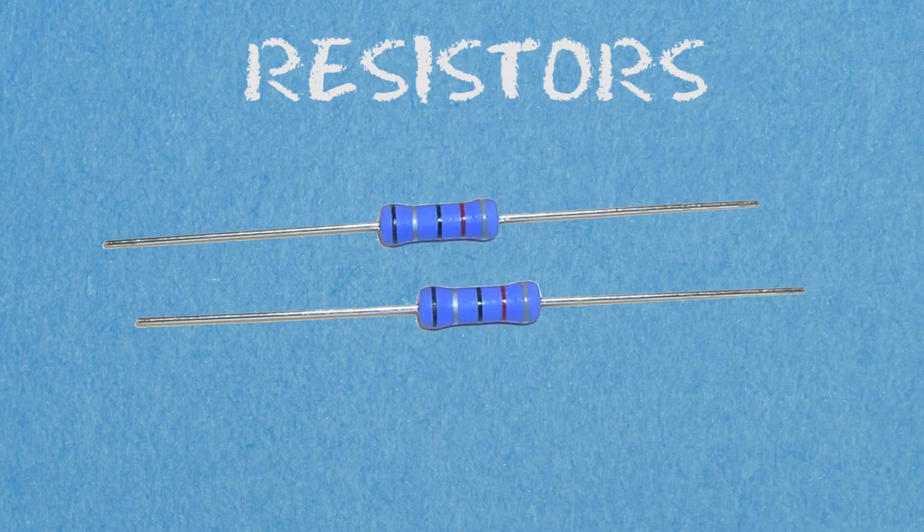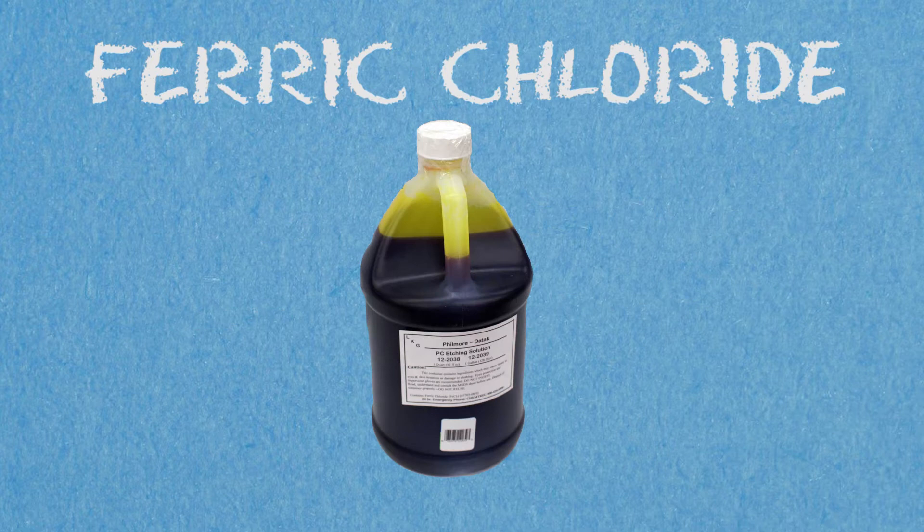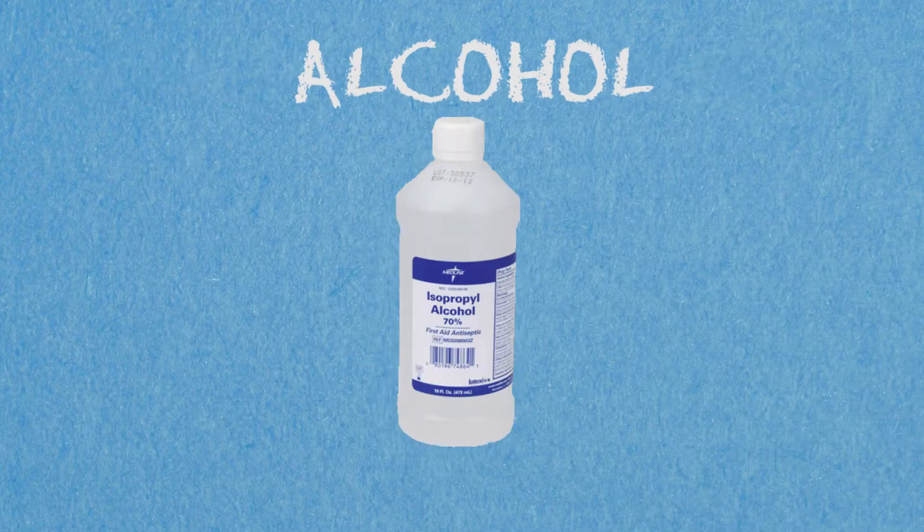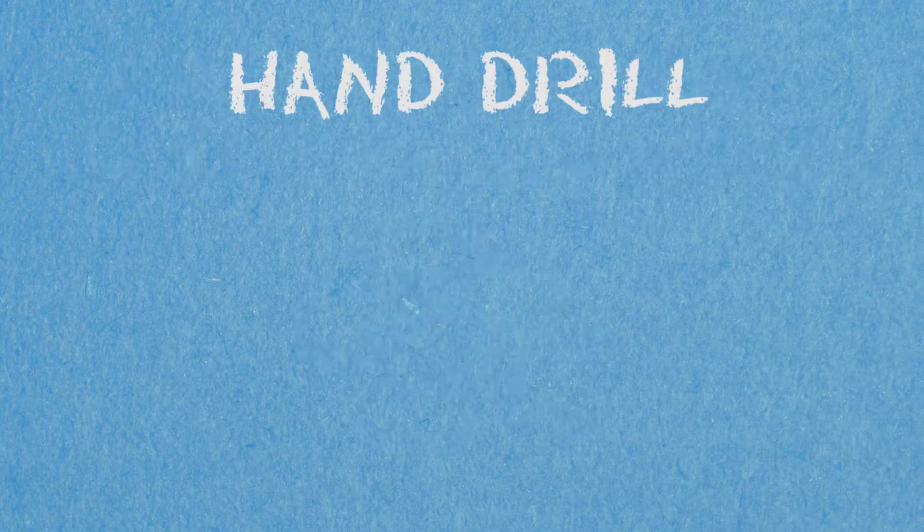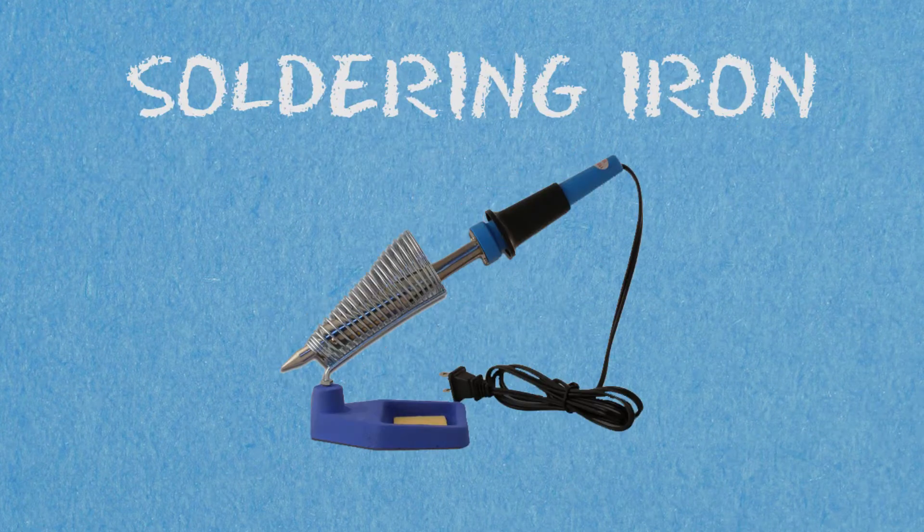We'll also need a couple of resistors, ferric chloride to remove unwanted copper, alcohol to remove the marker, 60% nickel 40% lead solder wire, multiple colored wires, hand drill, and soldering iron.